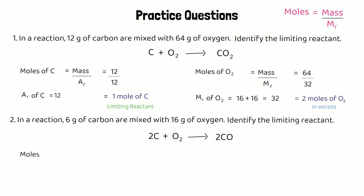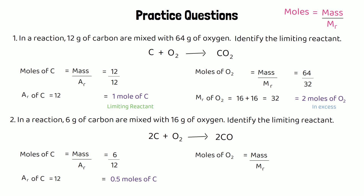For question two: moles of carbon = 6 ÷ 12 = 0.5 moles. Moles of oxygen = 16 ÷ 32 = 0.5 moles. The equation requires twice as many moles of carbon as oxygen (two-to-one ratio), but we have equal moles of each. We don't have enough carbon, so carbon runs out first — carbon is the limiting reactant and oxygen is in excess.